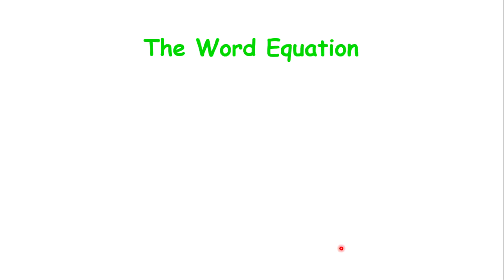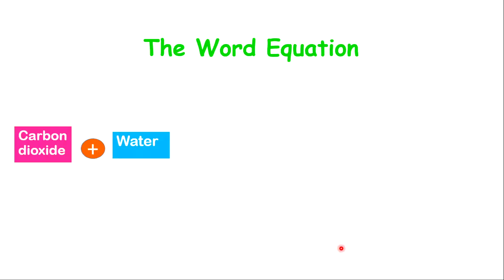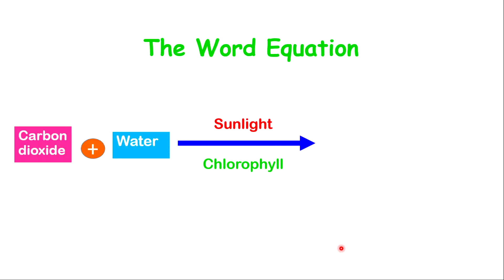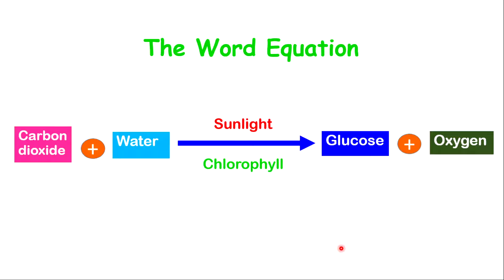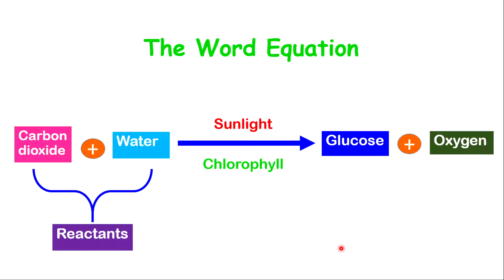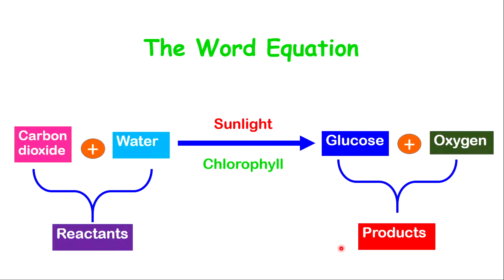The word equation for photosynthesis is that the organism, such as a plant or plant-like organism, will require carbon dioxide. The carbon dioxide will react with water in the presence of light, and light will be absorbed by chlorophyll. When all of this takes place, a reaction will occur and the reaction will produce glucose and oxygen. Oxygen is considered to be the waste product, or otherwise called the byproduct. The reactants are carbon dioxide and water; the products are glucose and oxygen. The oxygen must be excreted since it is a waste, and it is excreted through the leaf by the stomata.